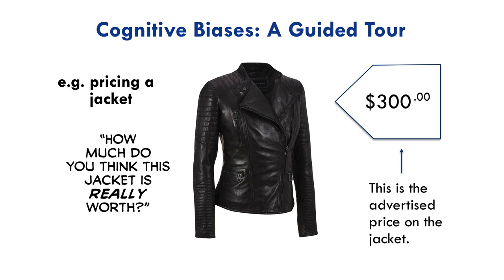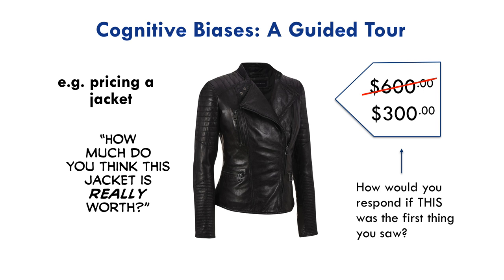Now let's consider the same question, but imagine that in your first encounter with this jacket, the sticker price was this: retail is $600, but it's been discounted down to $300. So this is what you see. Now when asked to estimate the true value of the jacket, what's your thought process? Well, it's the same as before, but now your first exposure is to a higher price, so your estimate is going to be anchored to this higher price.